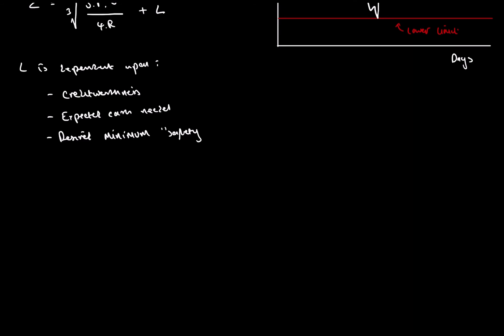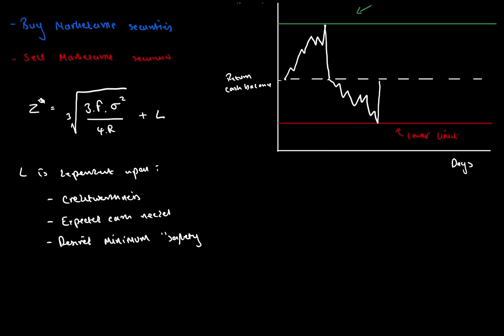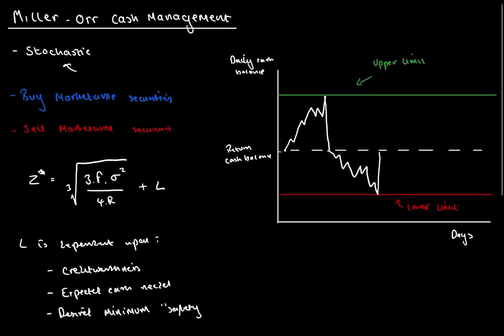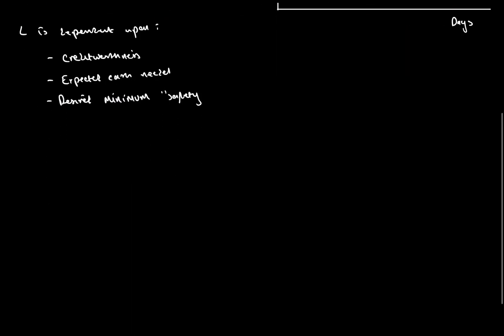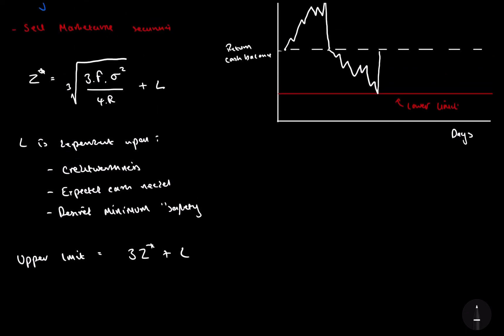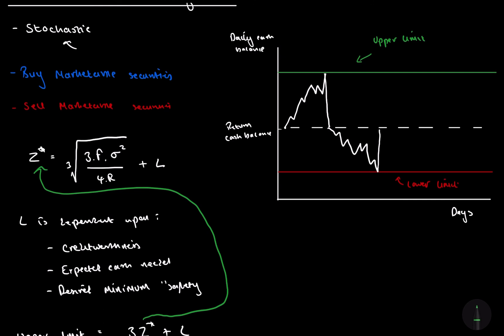So now that we've essentially given, now we essentially can calculate this return point based off our lower limit, now what we need to calculate is our upper limit. Now, our upper limit is calculated based off this Z star. And the formula for this is, the upper limit is equal to 3Z star plus L. So from this value up here, this Z star here is taken from this bit here. And from then we can calculate our upper limit. And that's where we buy marketable securities.